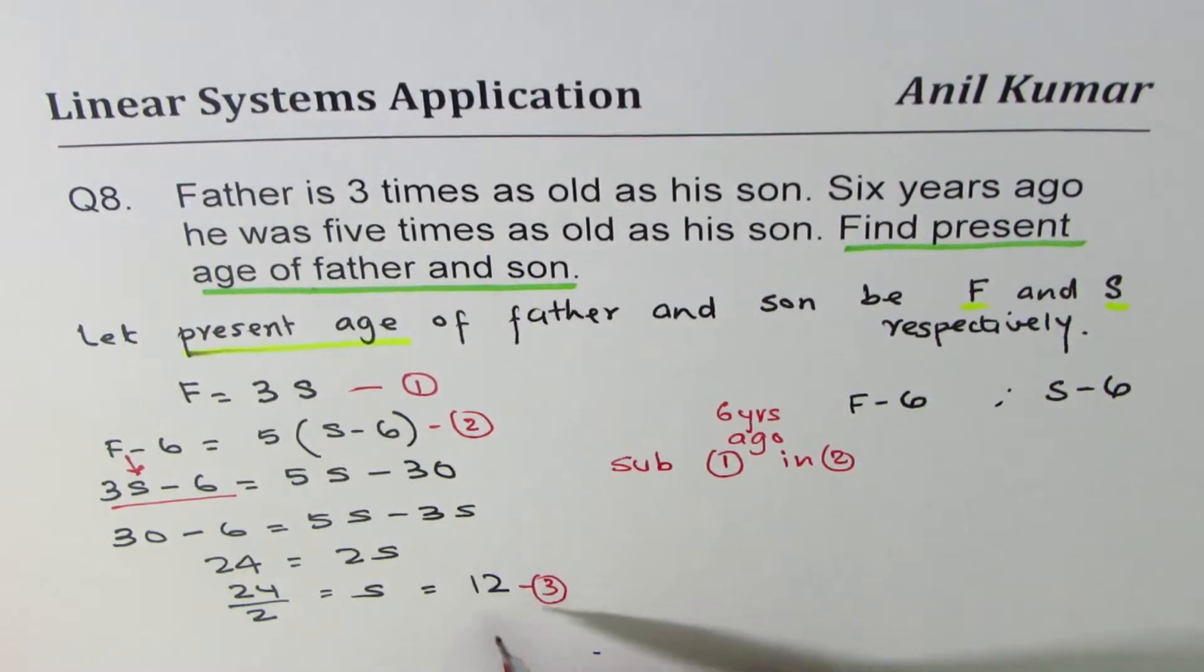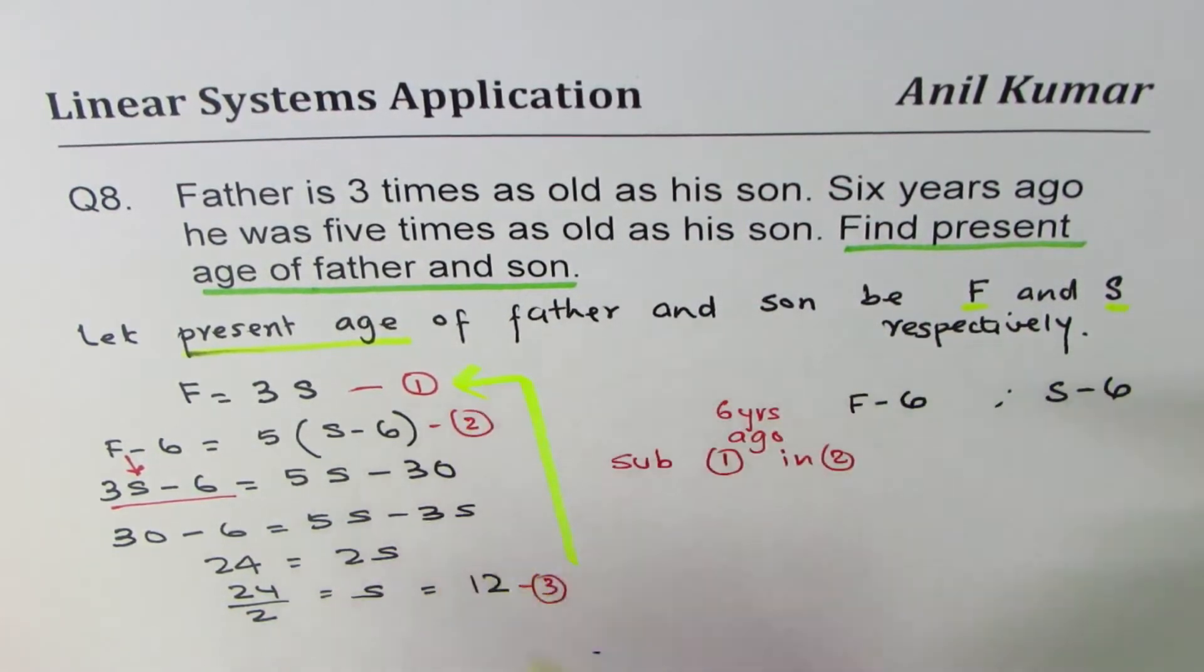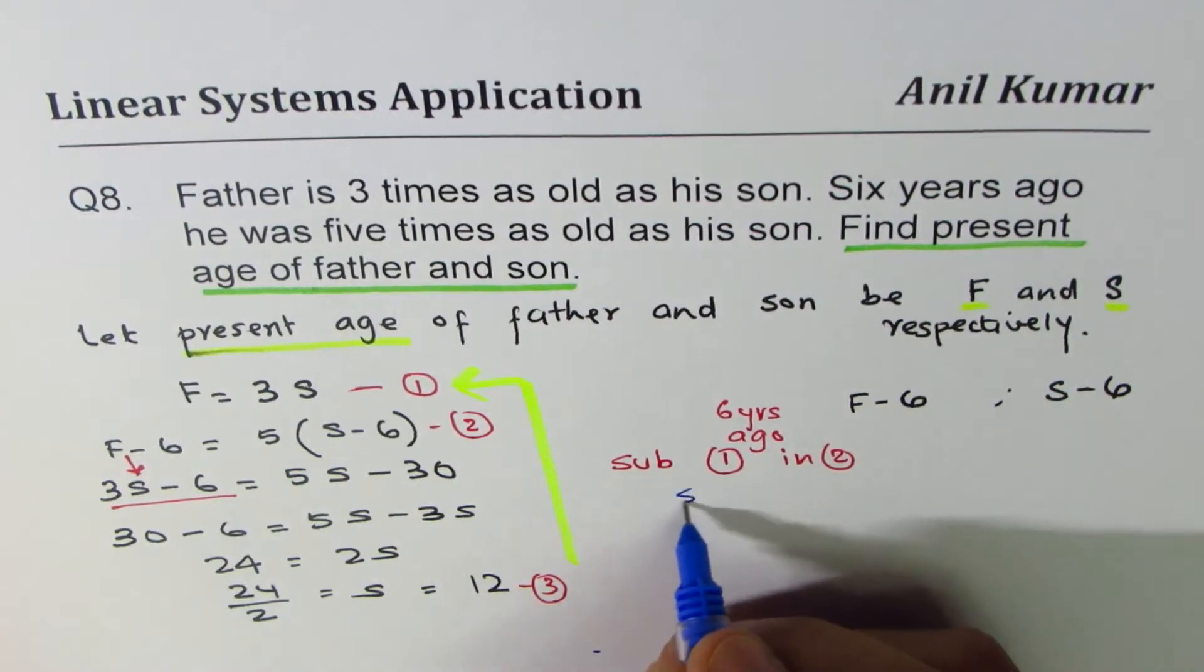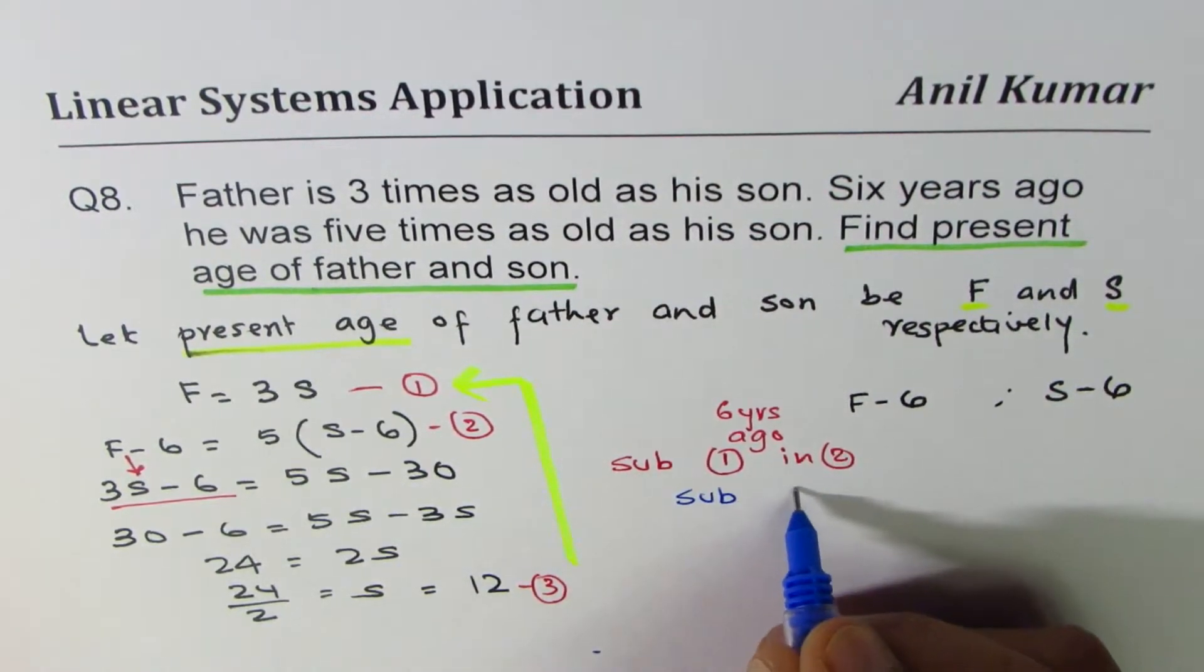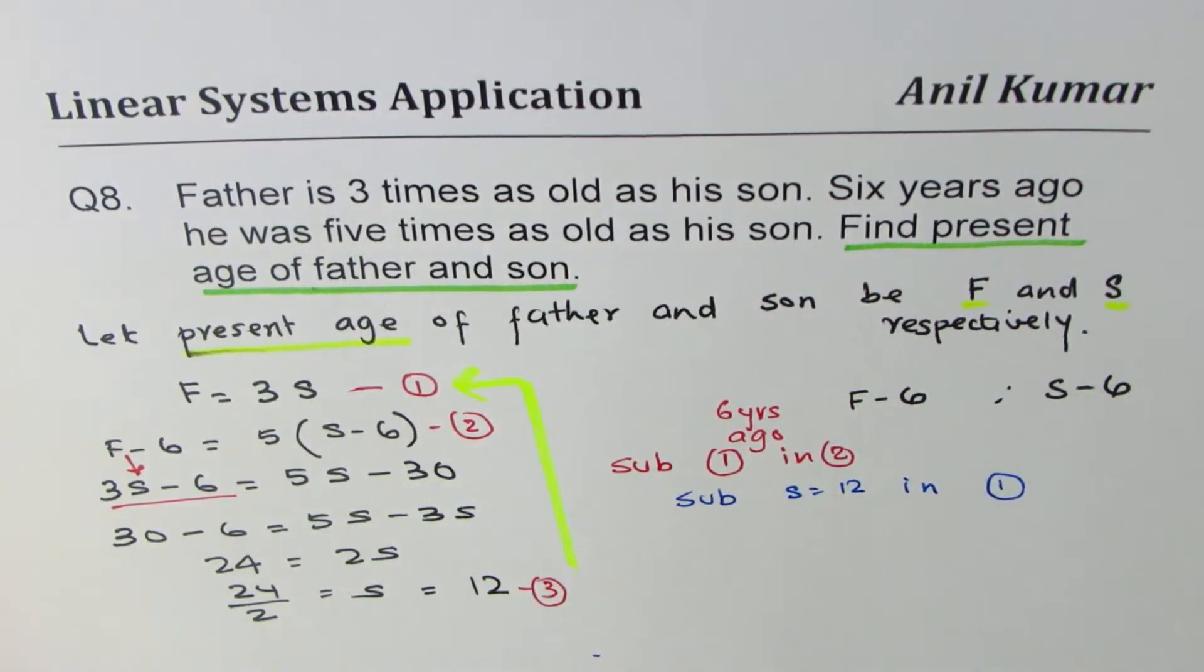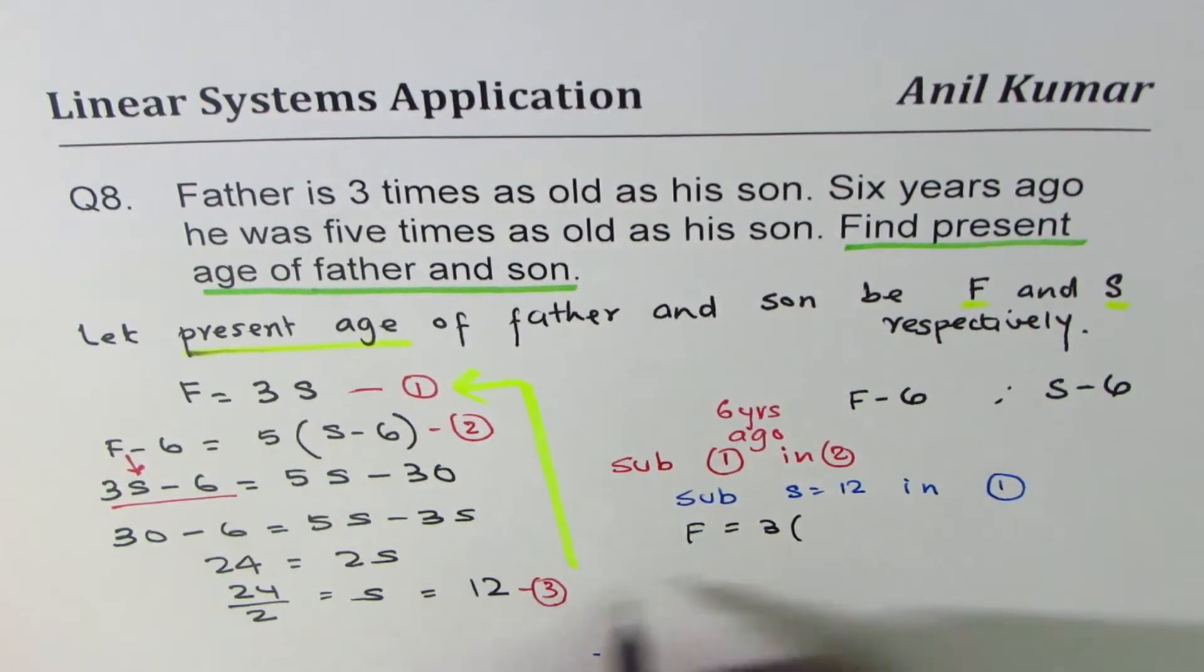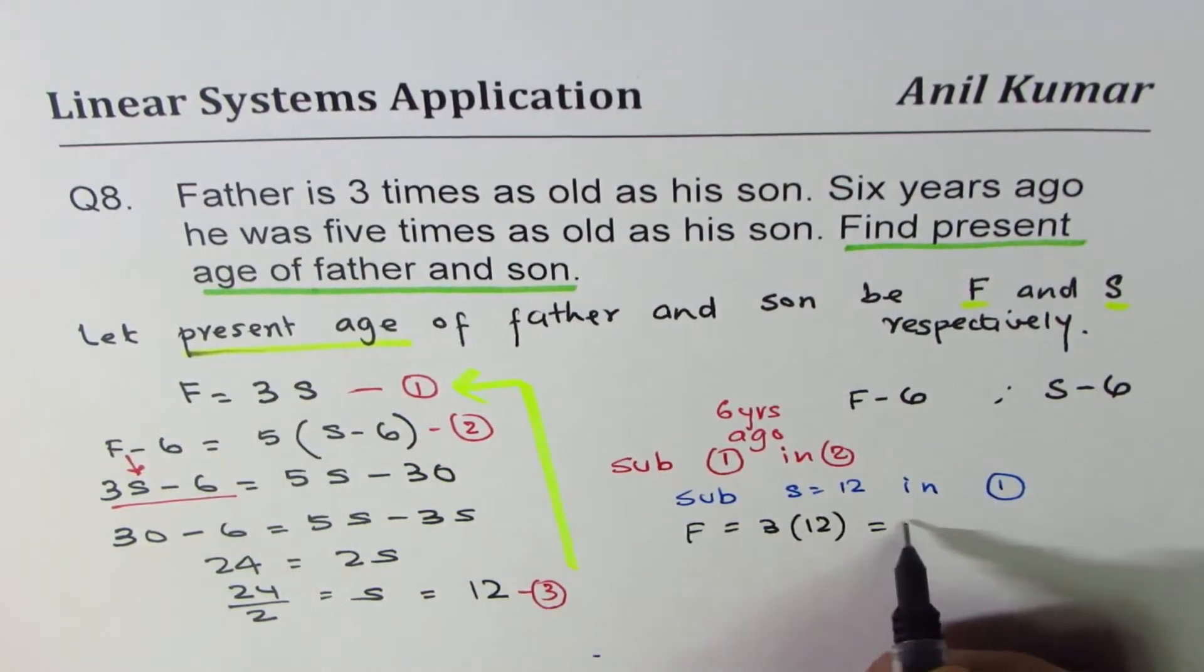Now to find father's age, we can substitute three in one. To get father's age, we'll sub S equals 12 in equation one. So we get father's age as three times 12, which is 36.